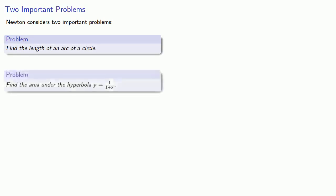Newton then considers two very important problems. First, to find the length of an arc of a circle. And next, to find the area under the hyperbola y equals one over one plus x. Now, the hyperbola is a straightforward application of the infinite series expansion of one over one plus x, so we'll leave that for the viewer.